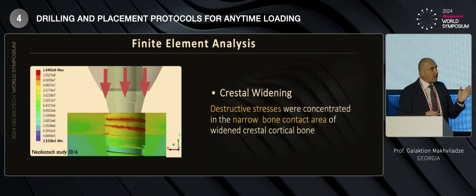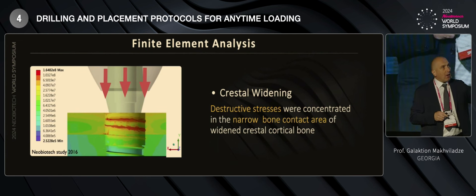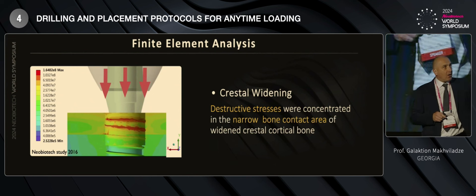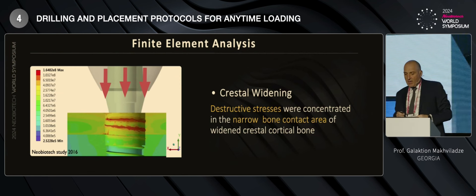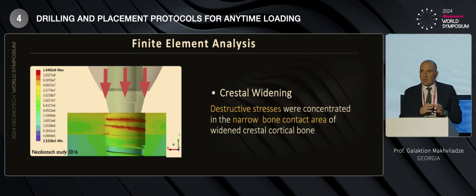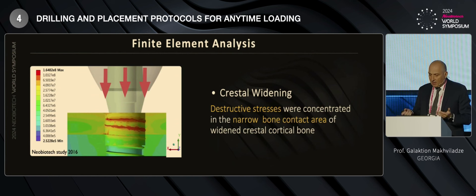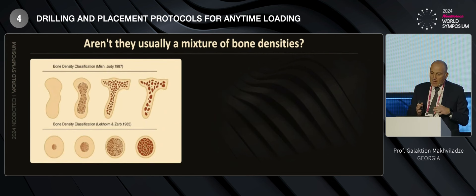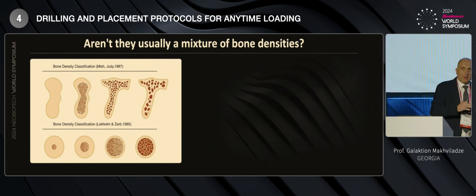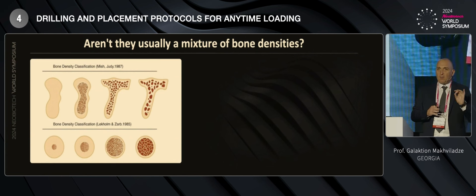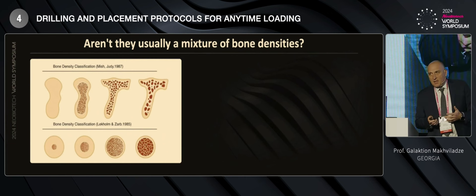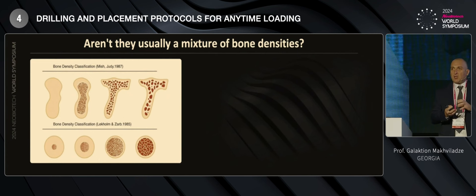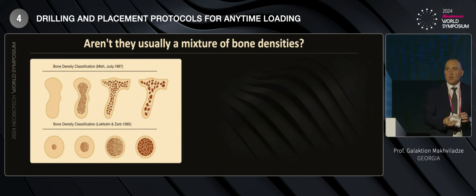Let's look at the analysis results. In the crestal widening situation, destructive stresses are concentrated in the narrow bone contact area of the widened crestal cortical bone. This compression can give us bone resorption in this area and sometimes it turns into peri-implantitis. In our practice we divide bone density into four types — D1, D2, D3, D4 — this is a well-known classification. But we don't have only one kind of bone density when placing the implant.